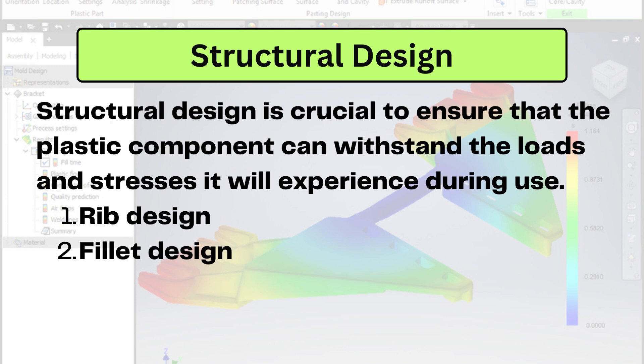Next, we have structural design. Structural design is also very important to ensure that the plastic component can withstand the loads and stresses during operation. For that, we generally design ribs, which is a common technique used to increase the stiffness of the component. For example, in a plastic chair, the backrest may be designed with ribs to increase strength and durability — you can see ribs on the backside of many components.